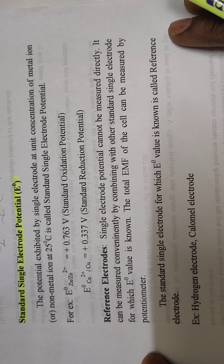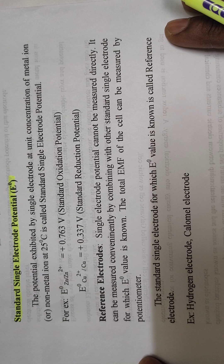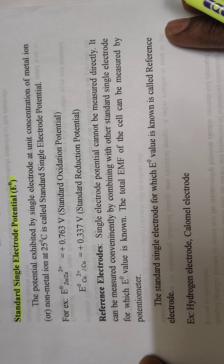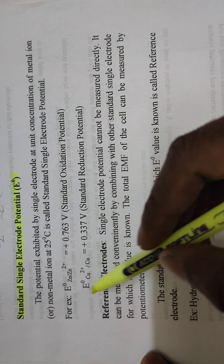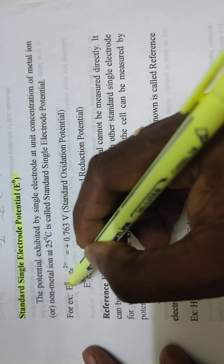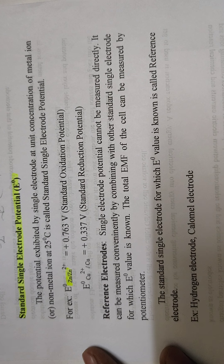Here E_L is the oxidation potential. If you put it in reduction potential scale, then in reduction potential scale E_cell = E_R minus E_L. If you want to express in oxidation potential scale, then E_cell = E_L minus E_R, where both are in oxidation potential scale. That is EMF.